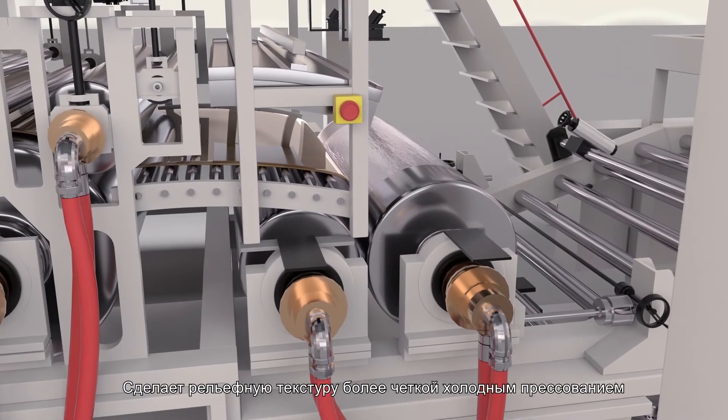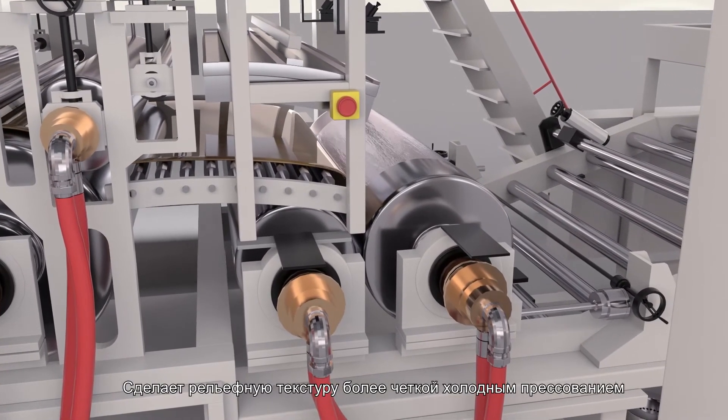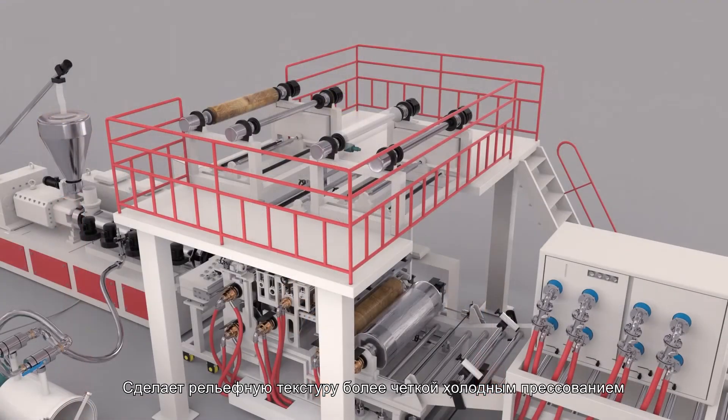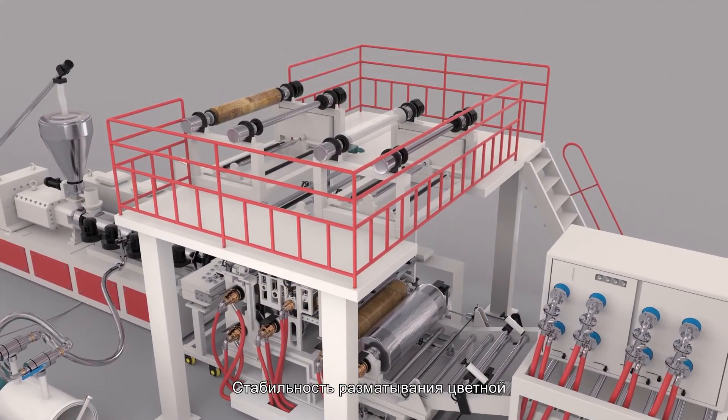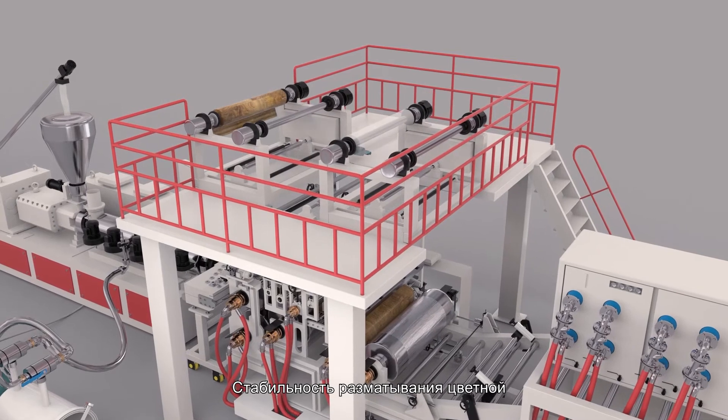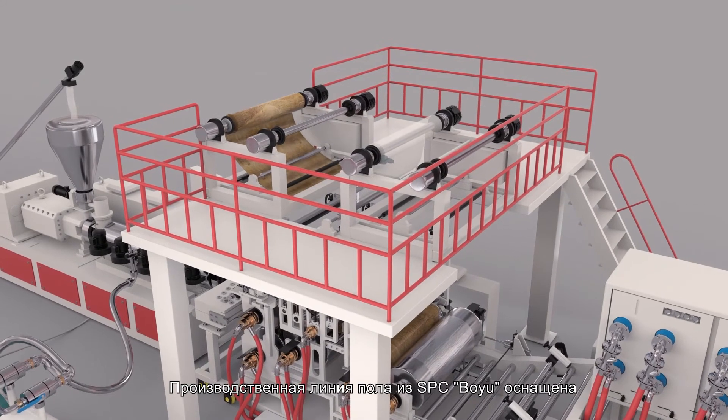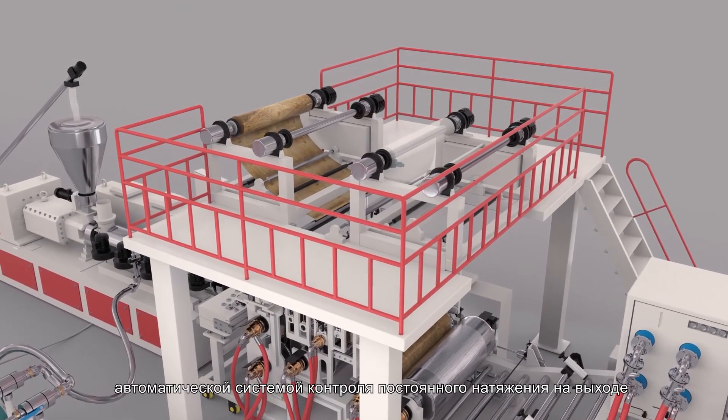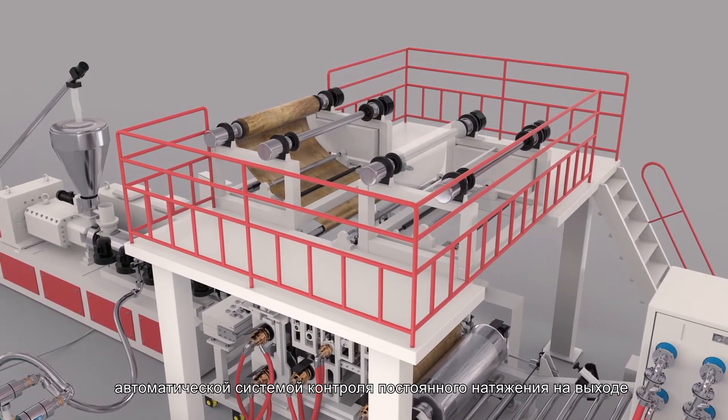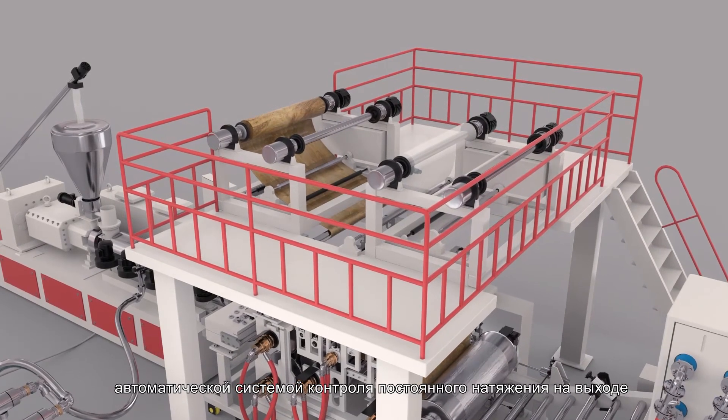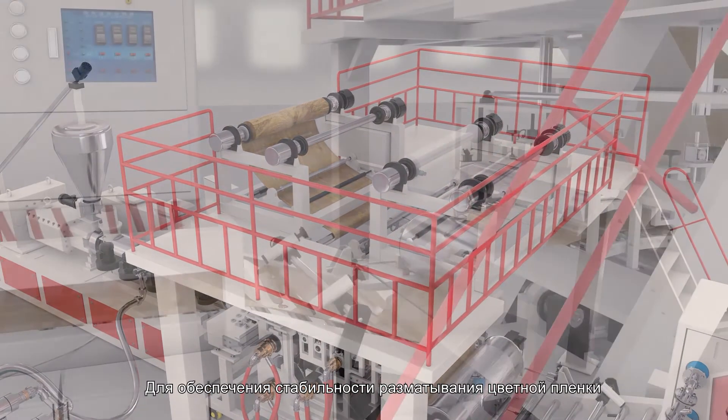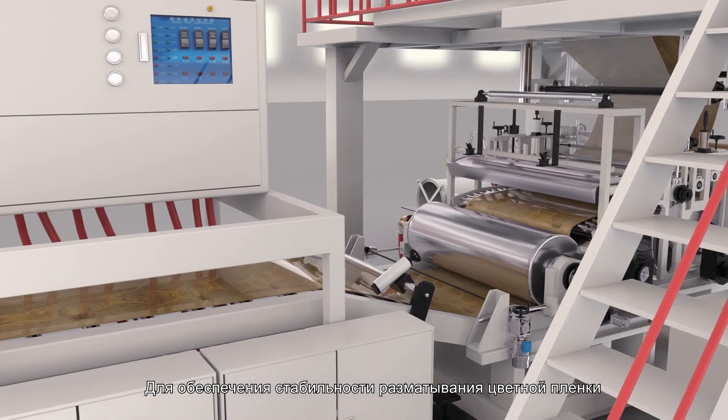Number 4 roller is made of silicon rubber band, which will make the embossing texture cleaner by using the method of cold pressing. The stability of color film and webbing is the key to the rate of final products. While in SPC floor production line...